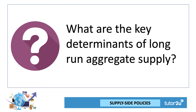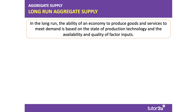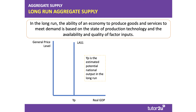What are the key determinants of long-run aggregate supply? In the long run, the ability of a country to produce those goods and services is fundamentally determined by the state of production technology — which of course we hope can change — and also by the availability and quality of the key factor inputs.